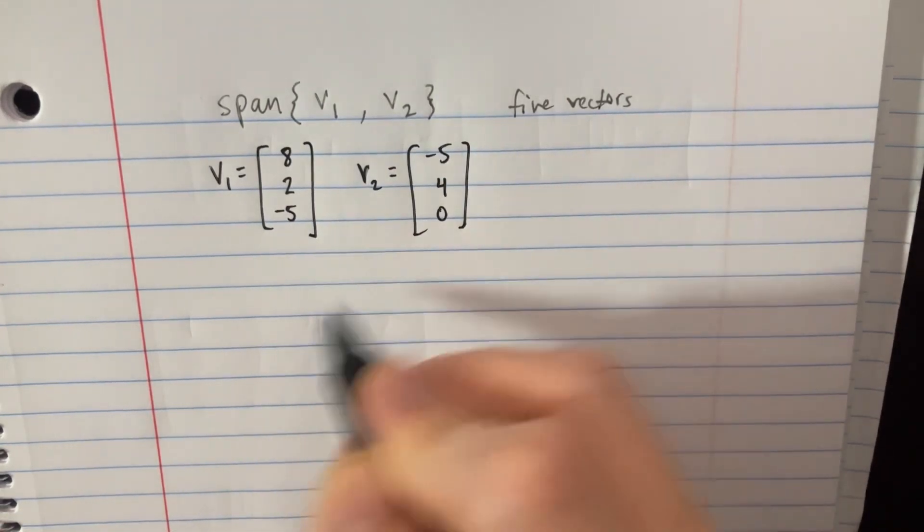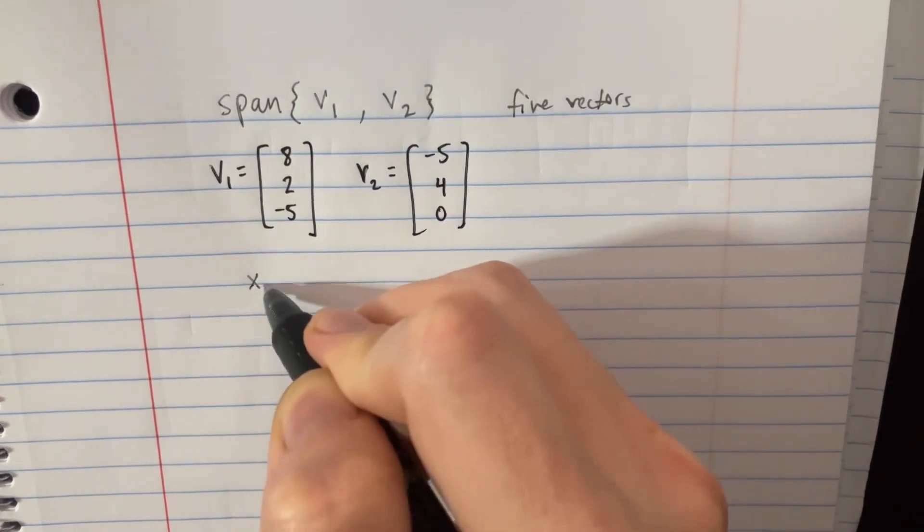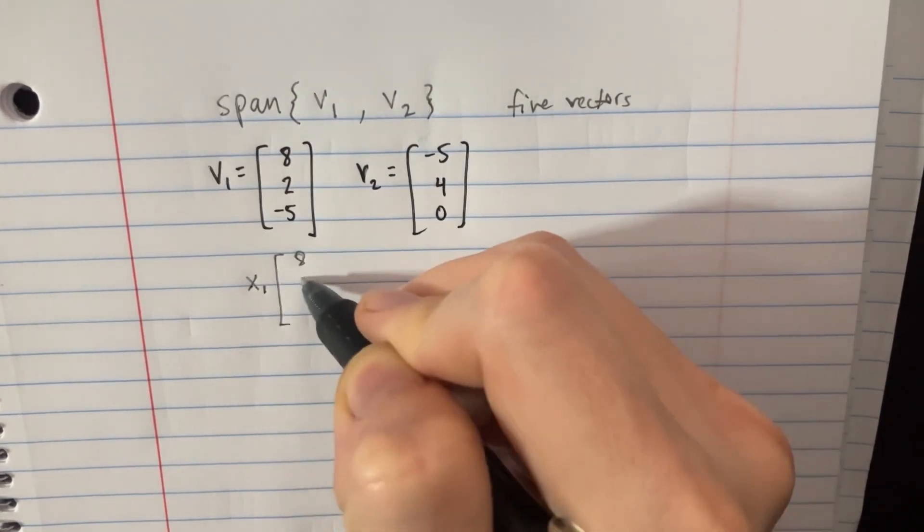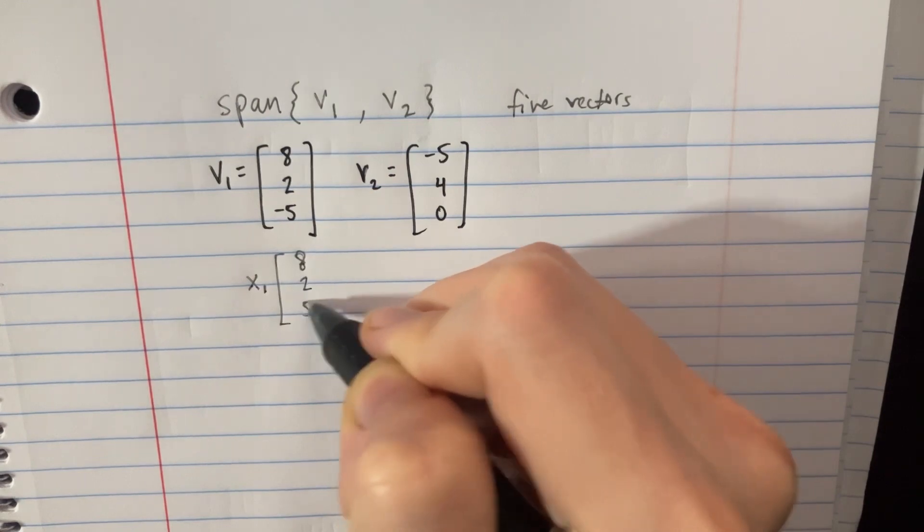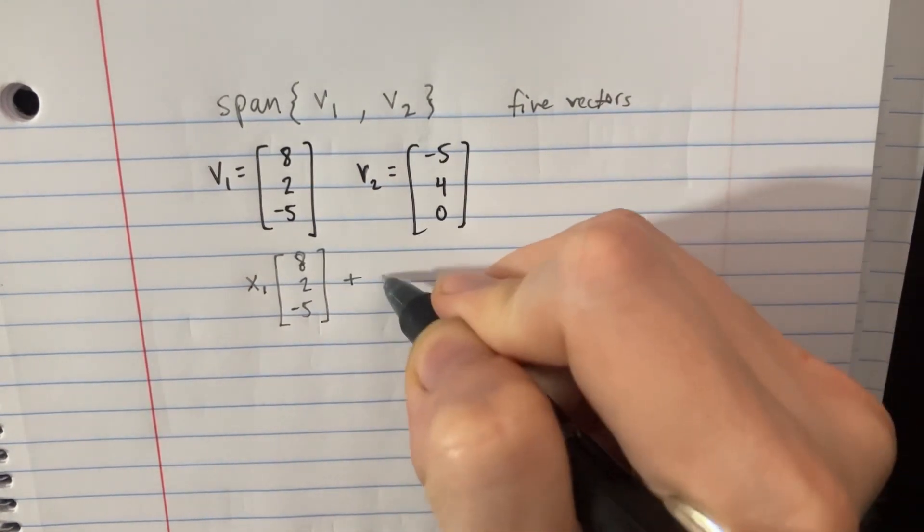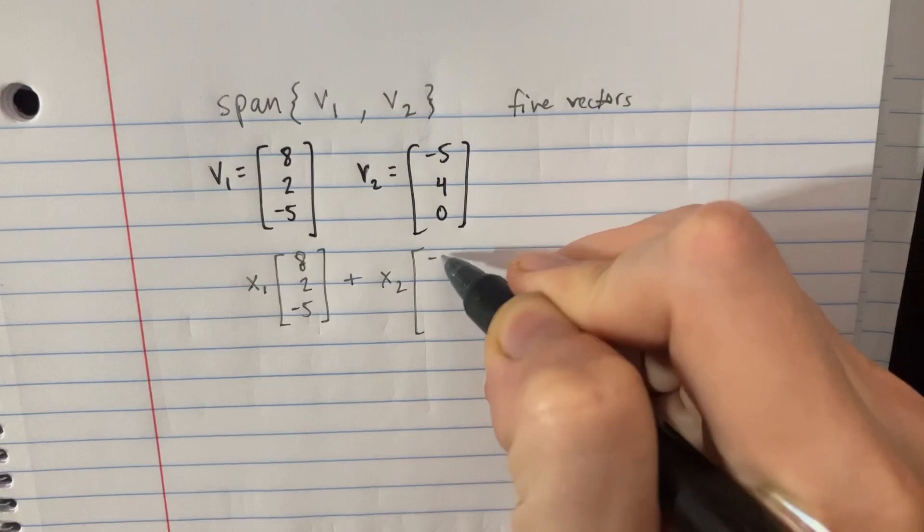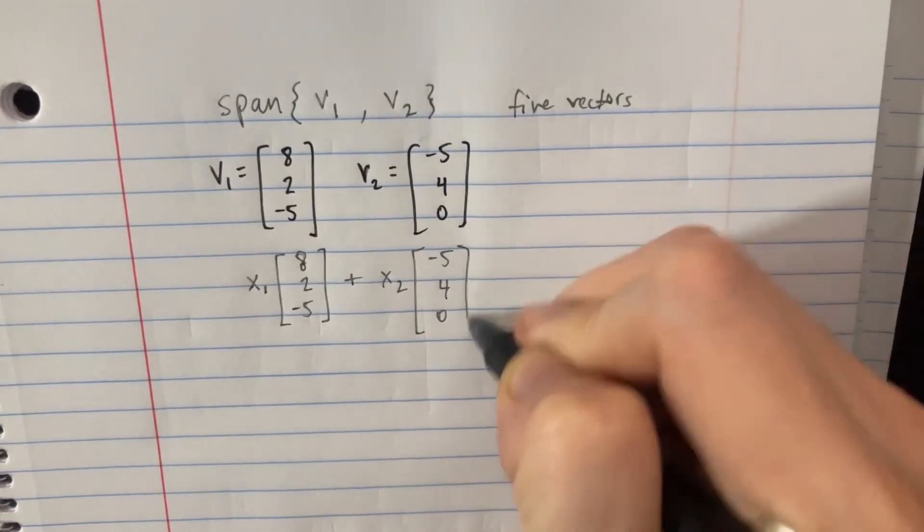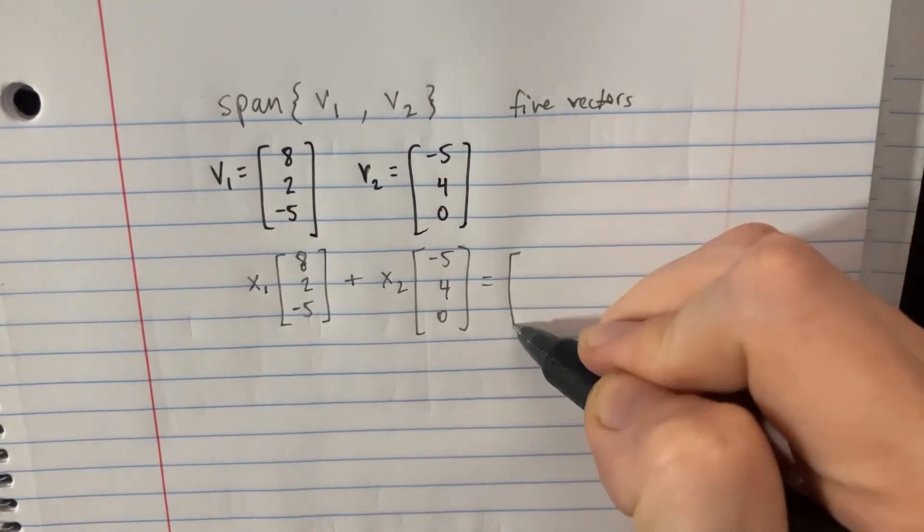So we can basically rewrite this as saying something like x1, and then there's going to be 8, 2, and negative 5, and then we're going to add another x2, and here's a negative 5, 4, and 0, and this is going to equal some sort of answer here.